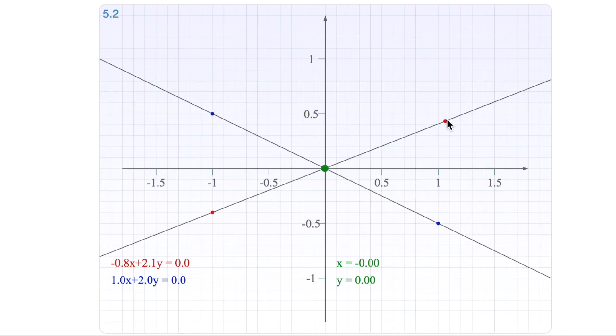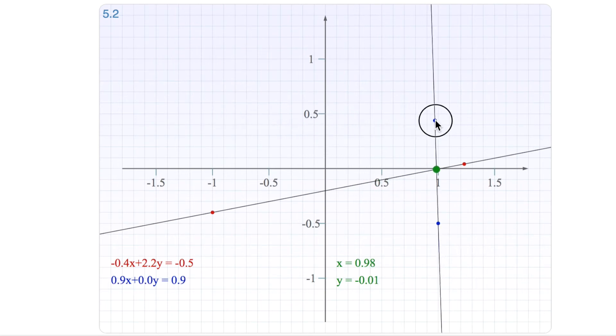You could place it somewhere else. Maybe you want to place it in 1, 0. So, for instance, like this. Here you can see the lower equation holds 0.9 times 1 equals 0.9, and so forth.